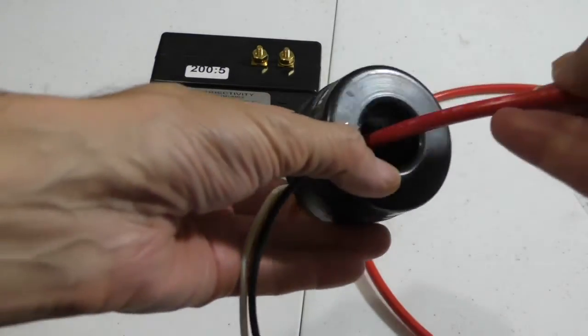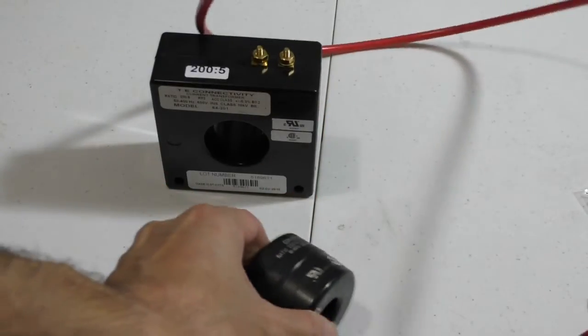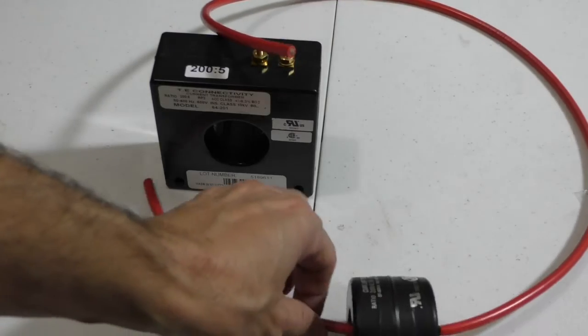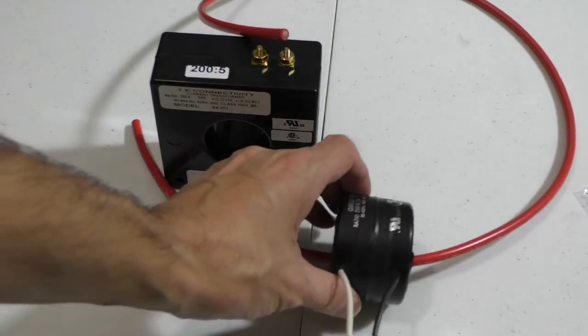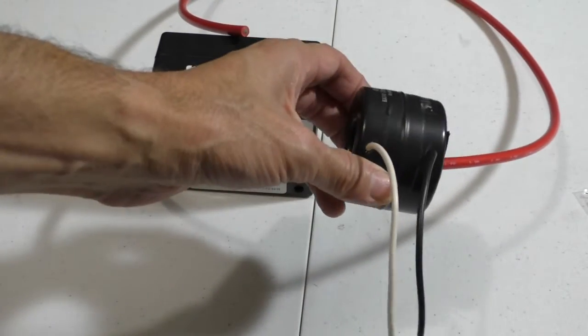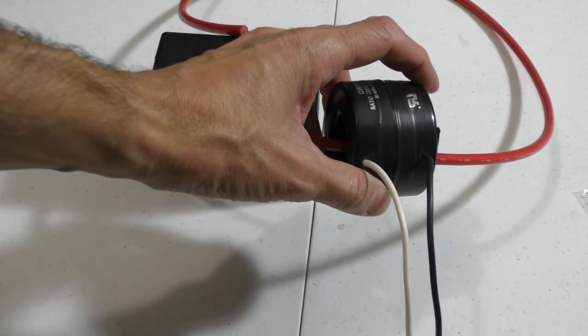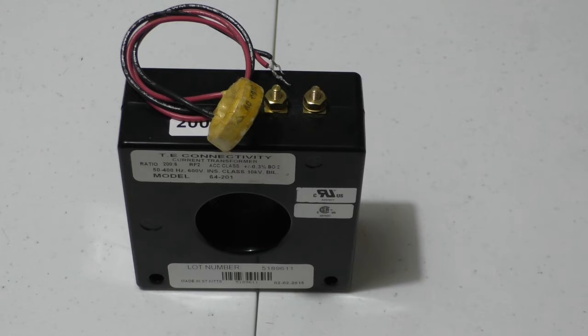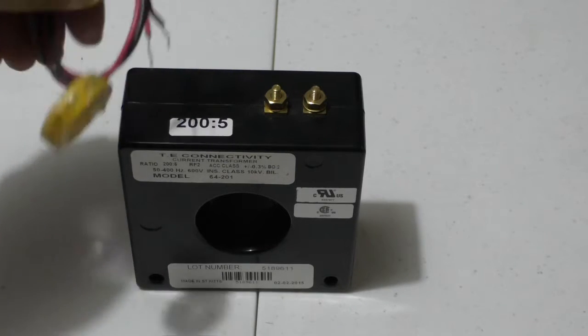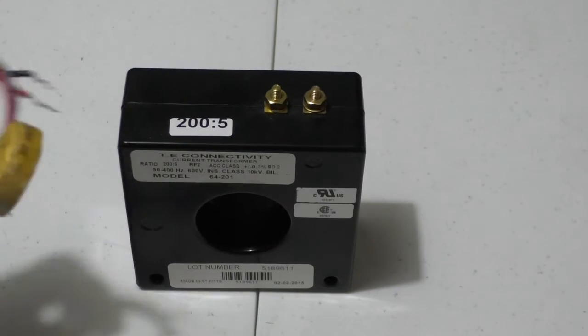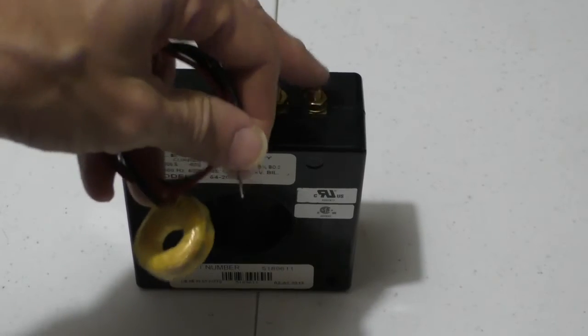It picks up the magnetic field from the wire. If there's no current flowing through the wire, there is no current flowing out of the current transformer. So how do you measure how many amps is coming out of the CT? Do you stick an amp meter across there?